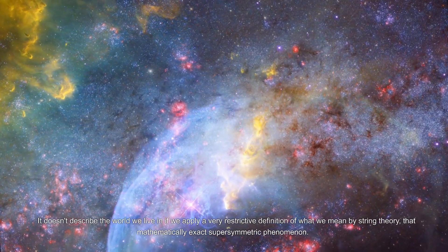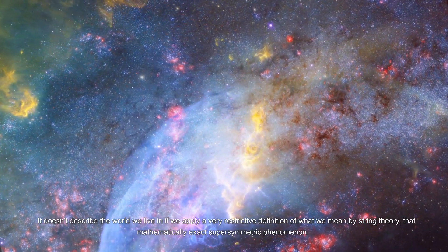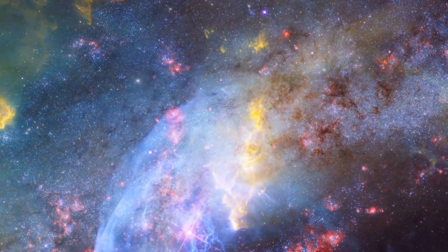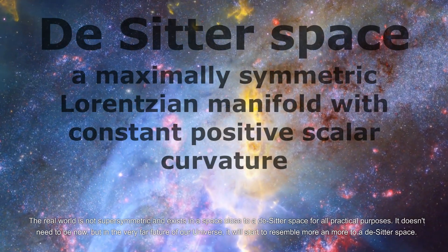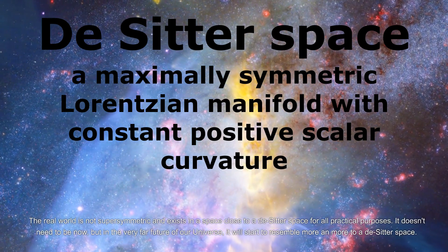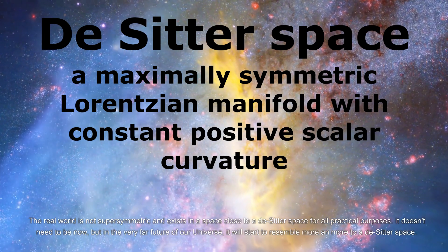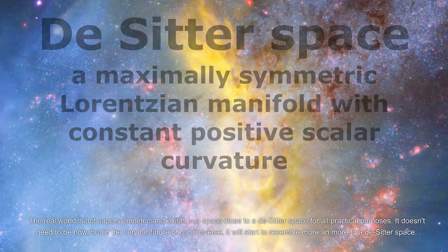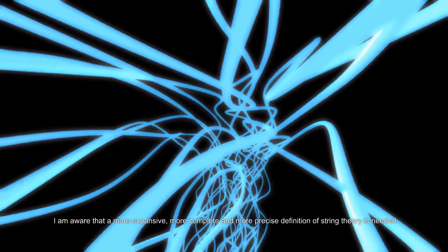It doesn't describe the world we live in if we apply a very restrictive definition of what we mean by string theory—that mathematically exact supersymmetric phenomenon. The real world is not supersymmetric and exists in a space close to a de Sitter space. For all practical purposes, it doesn't need to be now, but in the very far future of our universe it will start to resemble more and more a de Sitter space.